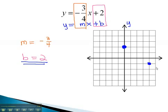By connecting these dots, we get the line that goes with the equation, y equals negative 3 fourths x plus 2.